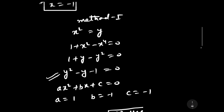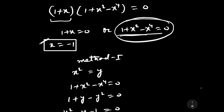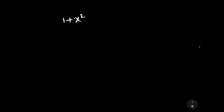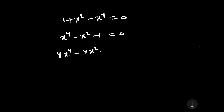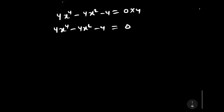Now let us factorize 1 plus x squared minus x to the power 4 equals 0 using Method 2. We rewrite it as x to the power 4 minus x squared minus 1 equals 0. Multiplying through by 4 gives 4x to the power 4 minus 4x squared minus 4 equals 0.